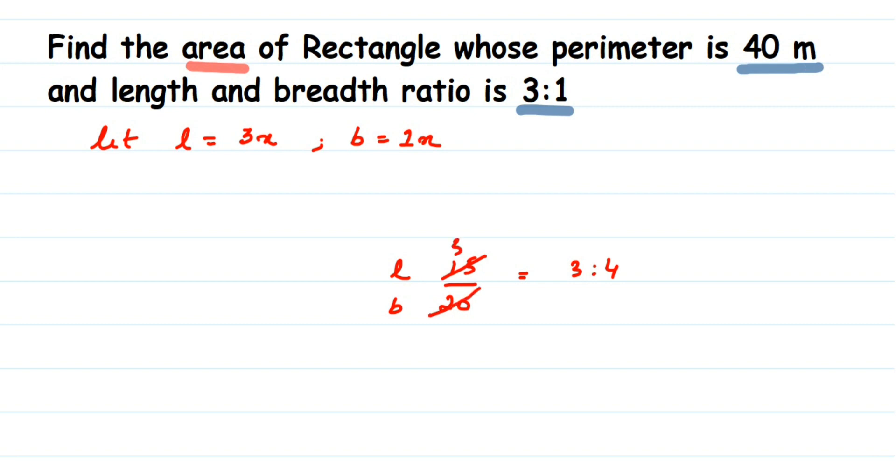So ratios are always given in reduced form, but actual length and breadth could be anything. There could be a common factor - like I cancelled by 5, so 5 is a common factor. Here also there could be a common factor - it could be 1, it could be 4, it could be any number. That is why we always assume a variable here.